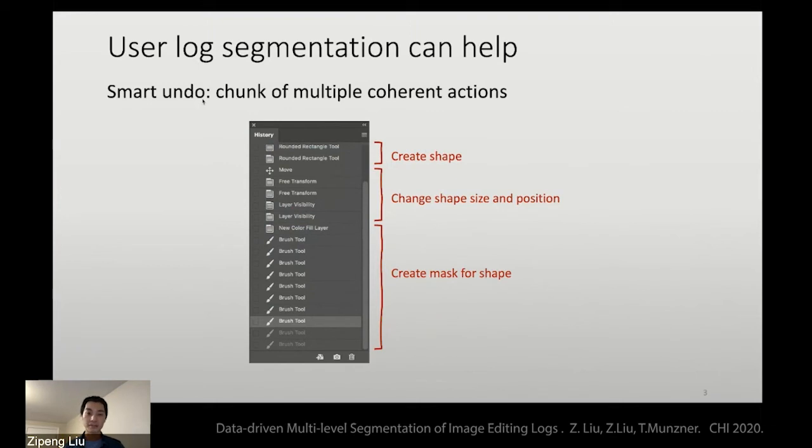Look at this example. You can actually group these individual actions into three chunks: create shape, change the shape, and create mask for shape.